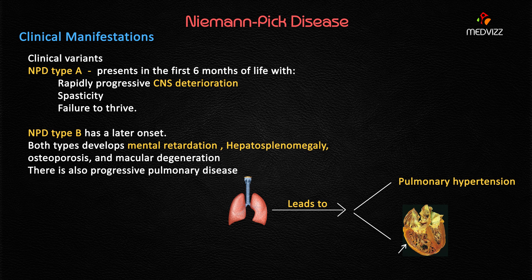Niemann-Pick disease Type B is a later-onset disease, generally after one year of age. To confuse students, exam questions may give hepatosplenomegaly, one year of age, and CNS features like seizures and spasticity together. The clinical manifestations of Type B include osteoporosis, mental retardation, and hepatosplenomegaly — with mental retardation and hepatosplenomegaly considered markers of Type B.